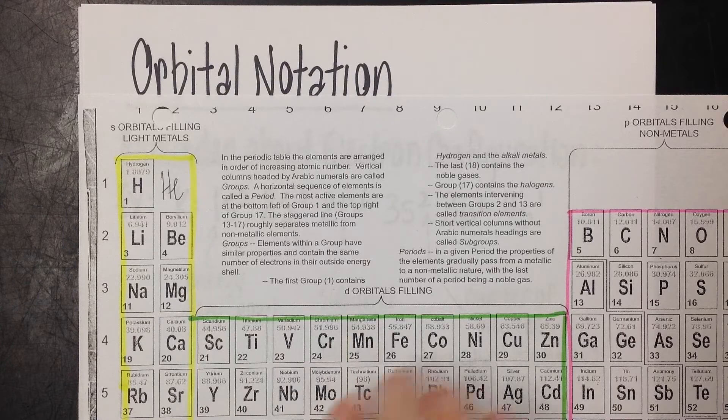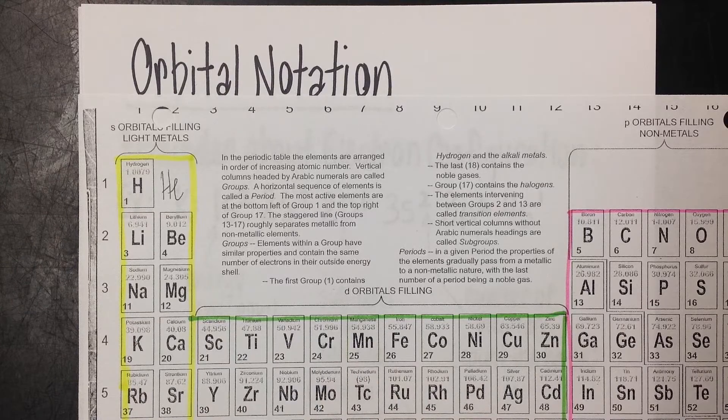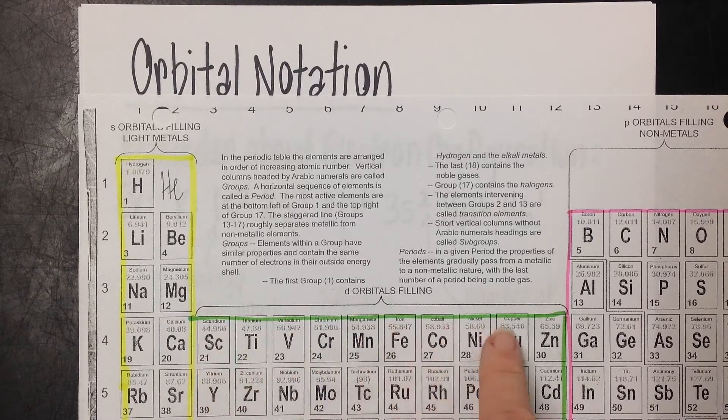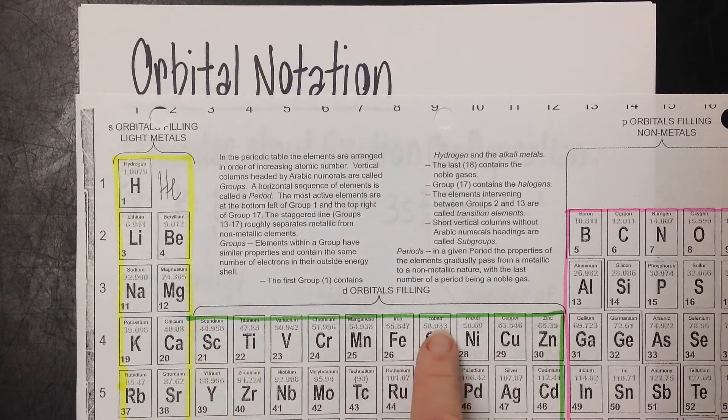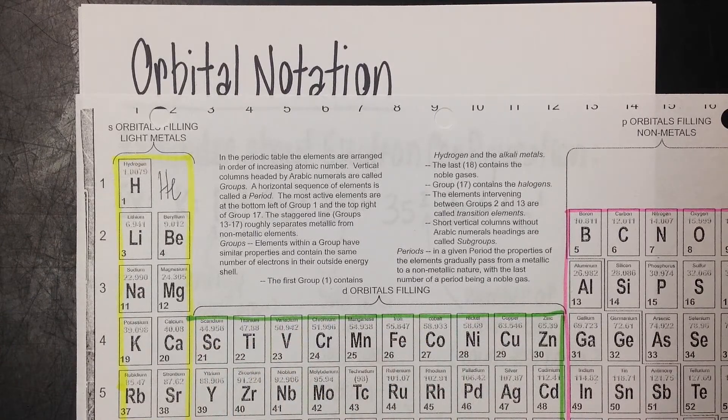One last reminder. Don't forget the D block is a level behind. This looks like row 4 of the D block, but it's actually row 3.